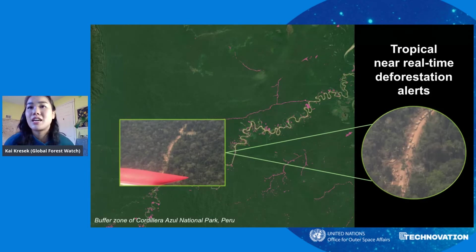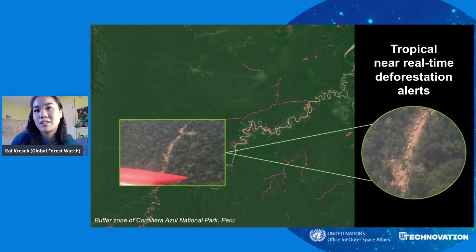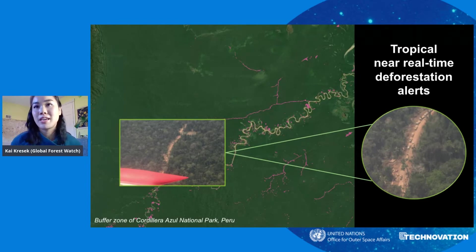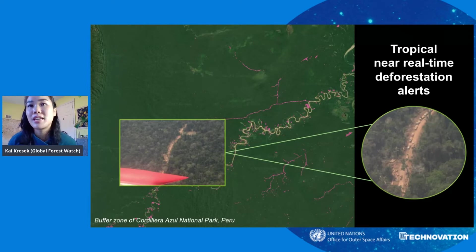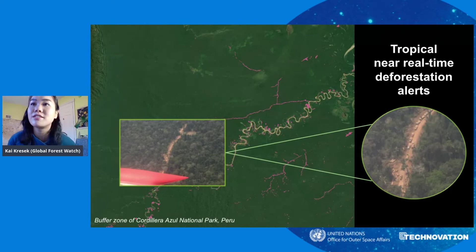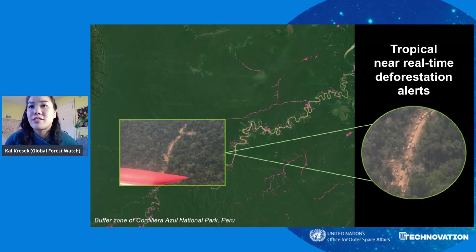The area on the screen right now is the buffer zone of Cordillera Azul National Park in Peru. As you can see, the pink pixels showing tree cover loss over time are spreading throughout the forest, and if you look at the zoomed-in image taken by a fixed-wing aircraft, you can see that the cause is a road cutting through the forest.